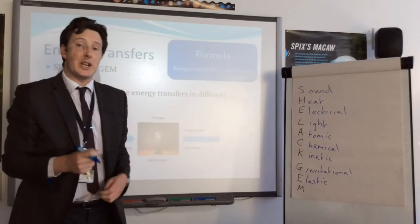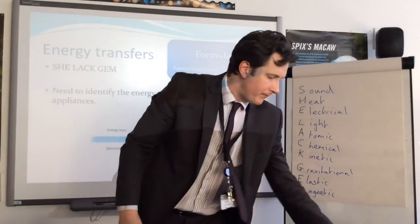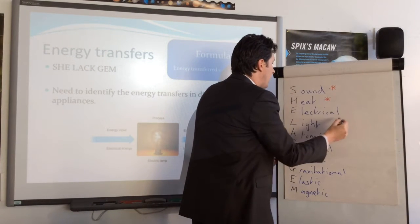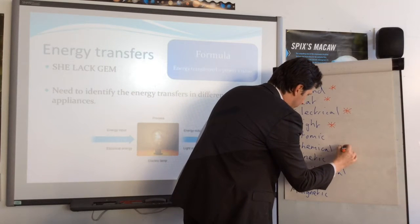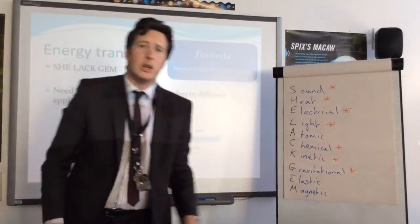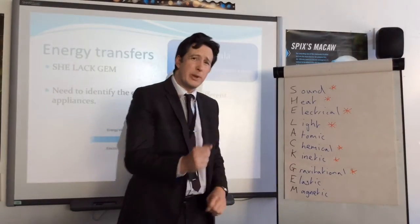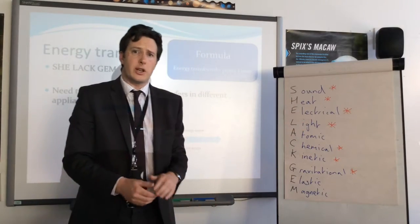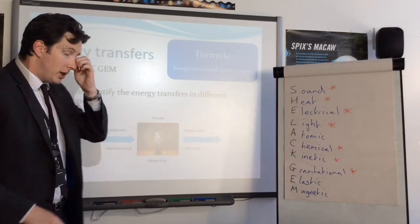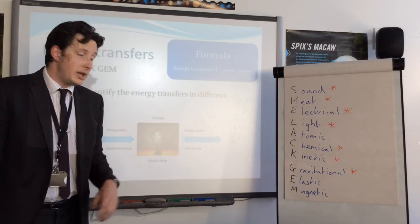The main energy types that come up in P1 energy transfers are: sound, heat, electrical, light, chemical, kinetic (movement energy — anything moving has kinetic energy), and occasionally gravitational. Atomic, elastic, and magnetic come up less often. You need to use these energy types to describe energy transfers.